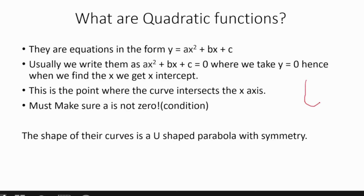Let me just draw it here for more clarity. These two points are the points we usually find — this is where y is equal to zero. The condition for this is that the coefficient of x², which is basically a, should not be equal to zero.